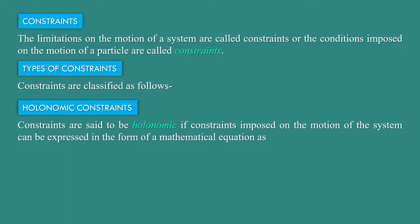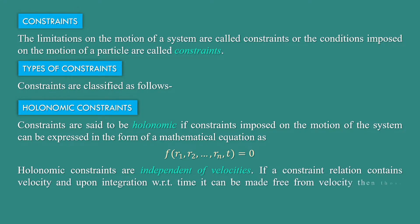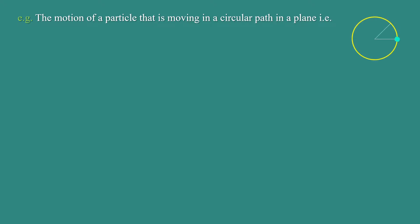The mathematical form of holonomic constraints is f(r₁, r₂, ..., rₙ, t) = 0. Holonomic constraints are independent of velocities. If a constraint relation contains velocity and upon integration with respect to time it can be made free from velocity, then those constraints are also known as holonomic constraints. For example, the motion of a particle moving in a circular path in a plane: |r| = k, which implies r − k = 0.